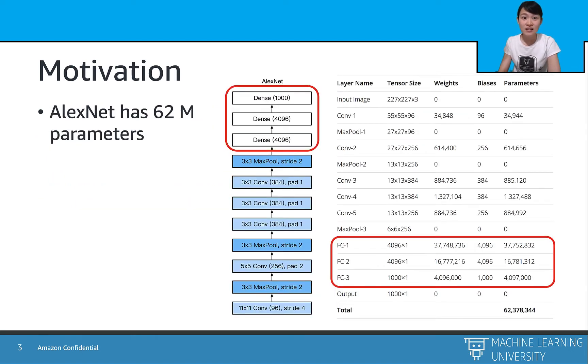So here is a detailed calculation of how many parameters does each layer have in AlexNet. As we can see, AlexNet has around 62 million parameters or weights.